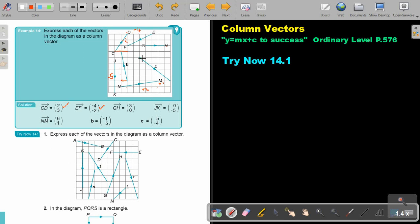And then number C. So it's 1, 2, 3, 4, 5. That's positive 5 and then down 1, 2, 3, 4 and negative 4. And that's the answer.